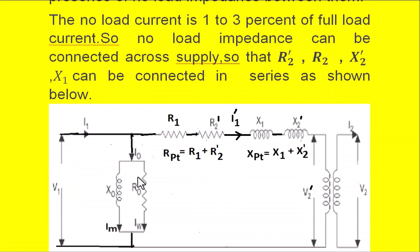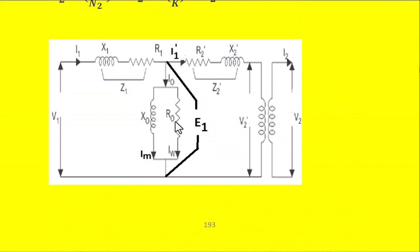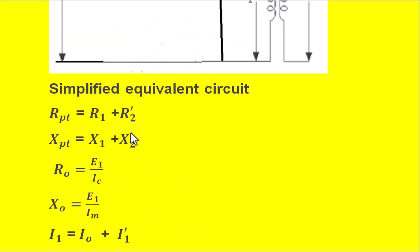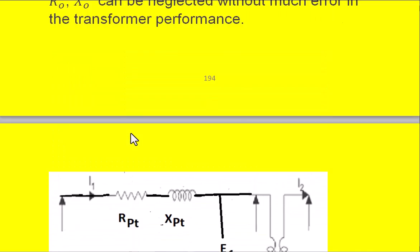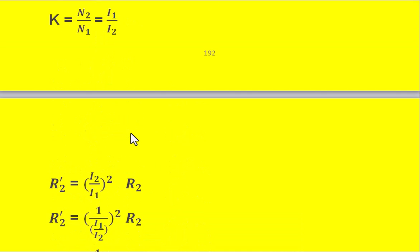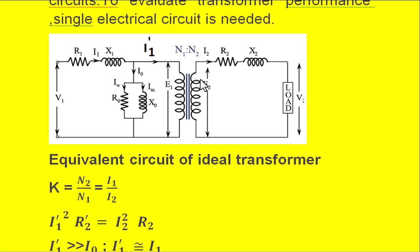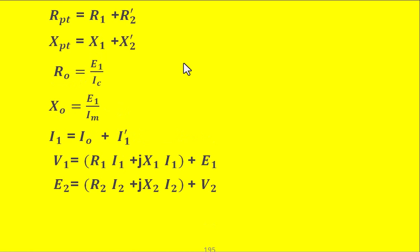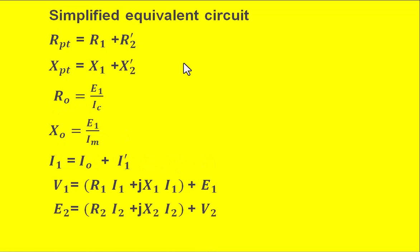Here Rpt equals R1 plus R2 dash and Xpt equals X1 plus X2 dash. R0 can be calculated as E1 divided by Ic, and X0 is calculated as E1 divided by Im. The input current to the transformer is I1 equals I0 plus I1 dash. So the equivalent circuit of the transformer referred to the primary is obtained by calculating R2 dash and X2 dash, which are the secondary winding parameters transferred to the primary side.